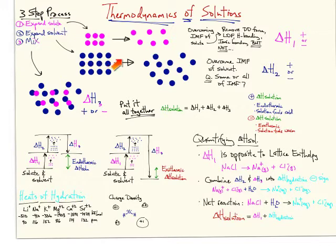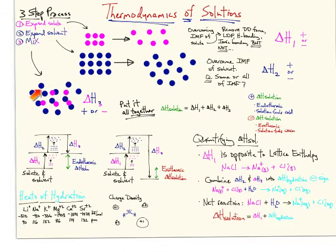We talked about expanding the solvent, and that that too was going to be a delta H that's positive, because you're going to be overcoming some intermolecular forces — not all of them, but some — associated with the solvent. And then lastly, we had delta H3, which was our mixing enthalpy, and we determined that that was going to be negative because the ion and the water interact in an ion-dipole interaction, removing energy from the system as a stabilizing interaction.